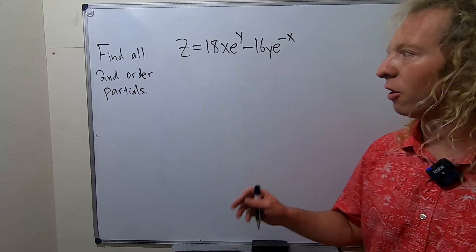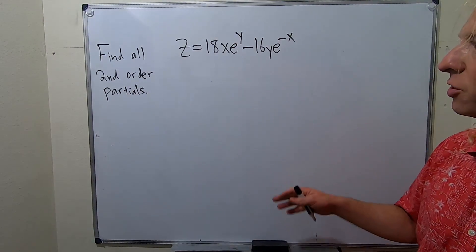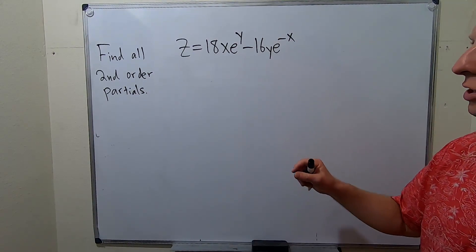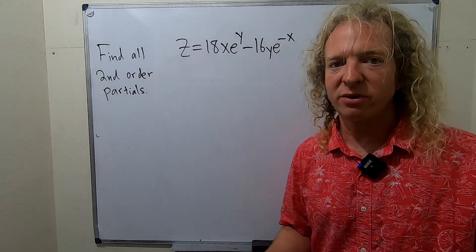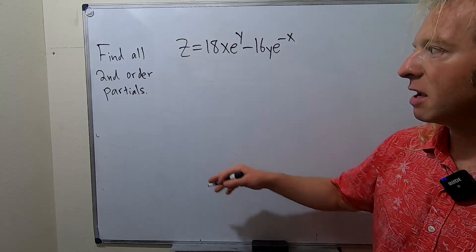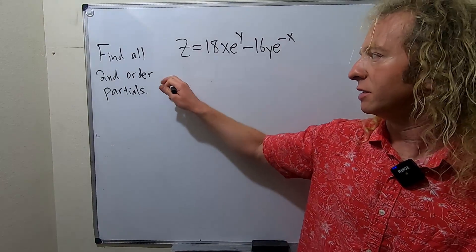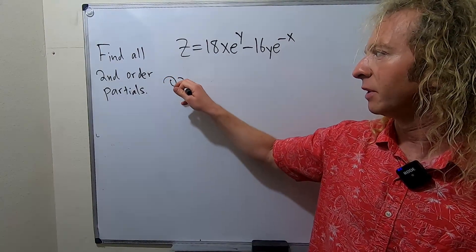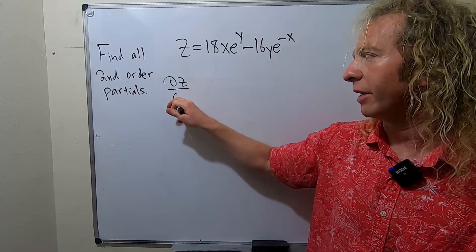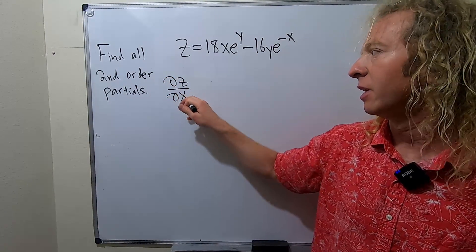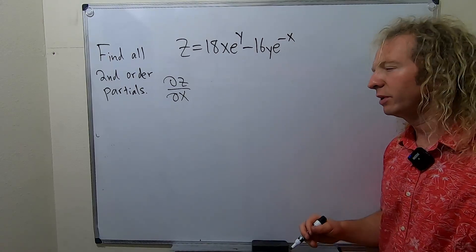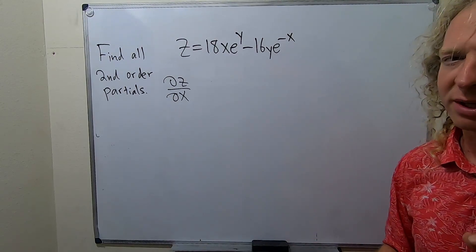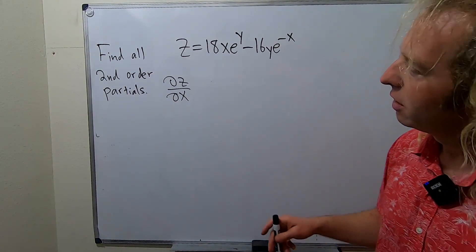In this video, we're going to find all second-order partials for this function. Let's jump into it. I'm going to go really slow because it's really easy to mess this up.